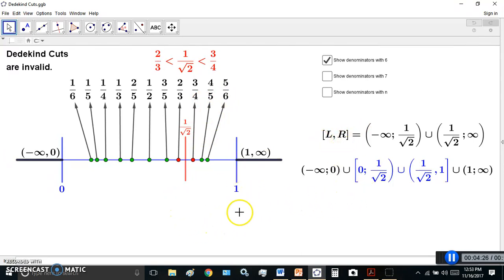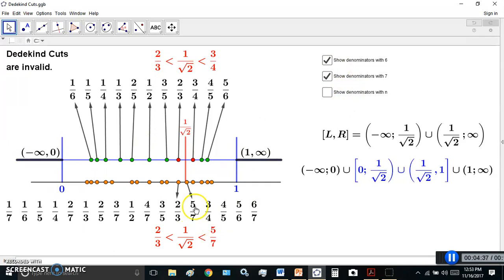What I want to show you now is that we can start off like this and keep increasing the number of rational numbers. It doesn't matter how many denominators we choose. Let's choose seven. If we choose seven, you'll see that these two red dots move closer to the actual number.